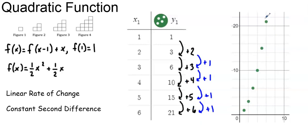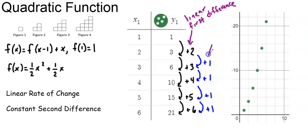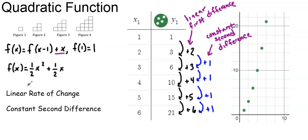We had previously established this is not a linear function because of the rate of change and the shape of the graph — this is a quadratic function. Quadratic functions have a linear rate of change, meaning the first differences can be modeled with a linear function, and they have a constant second difference. With a recursive equation you're always adding a linear expression — in this case, plus x. In standard form, a quadratic is f(x) = ax² + bx + c, and you will always have that x² term.